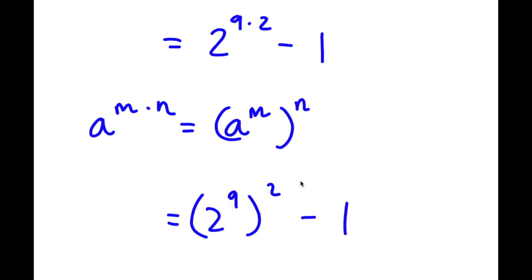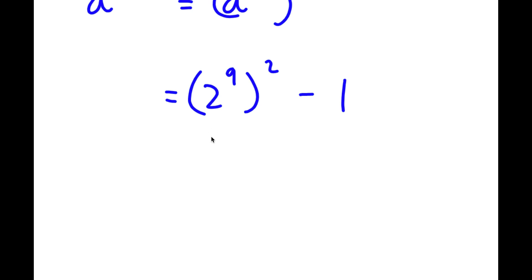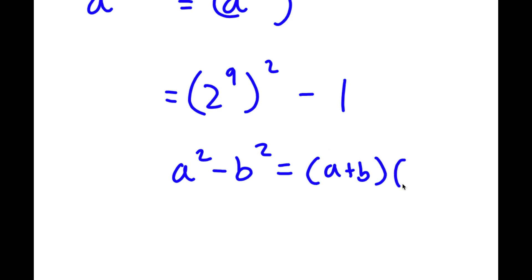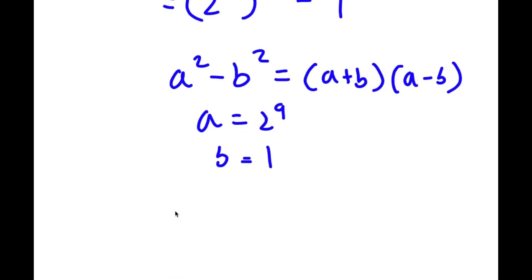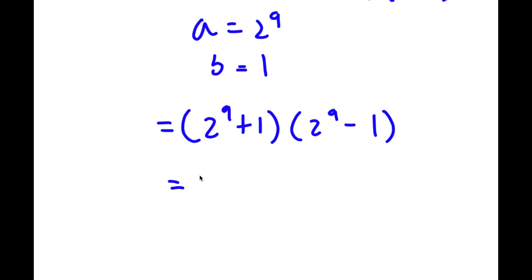If I have something in the form a squared minus b squared, this is equal to a plus b times a minus b. In this case, we can think of 1 as 1 squared. Now that we have 2 to the power of 9 squared minus 1 squared, we can think of a as 2 to the power of 9 and b as 1. So now I have 2 to the power of 9 plus 1 times 2 to the power of 9 minus 1. And 2 to the power of 9 is simply equal to 512. So now I have 512 plus 1 times 512 minus 1.